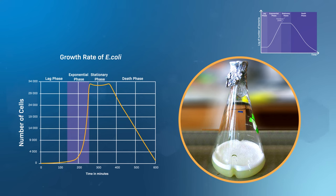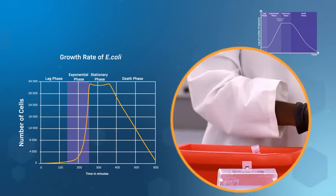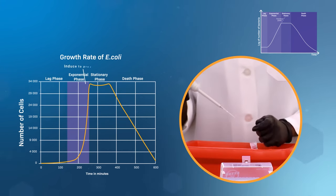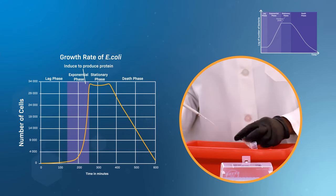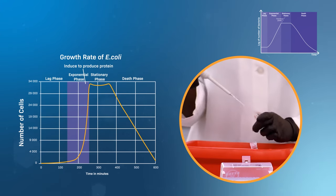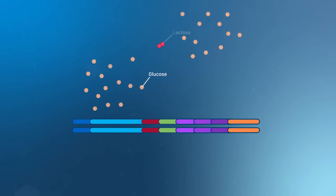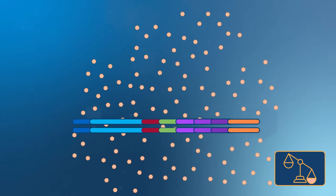Just before the stationary phase, the cells will be induced, meaning a chemical is added to the growth medium to force the cells to produce the protein of interest. The chemical is often a specific nutrient or small molecule that regulates the promoter for the gene of interest.